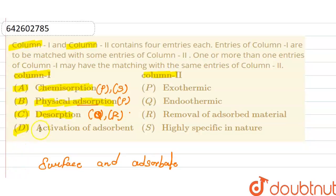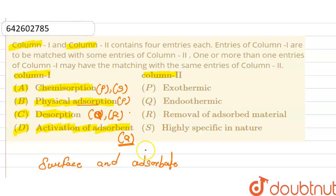The fourth one is activation of adsorbent. Activation of adsorbent means increasing the adsorbing power of the adsorbent. This can be achieved by making the surface rough through chemical action, which increases the specific surface area of the adsorbent. This means the activation of adsorbent follows an endothermic process. So the answers for the match the following options are as given.